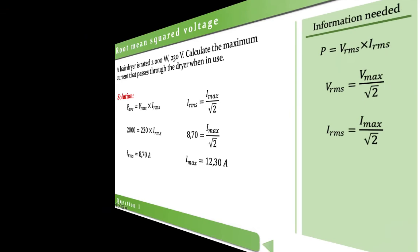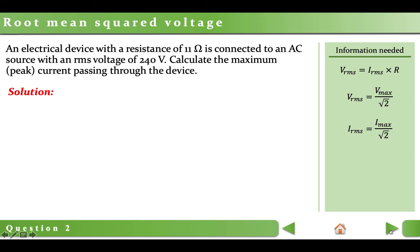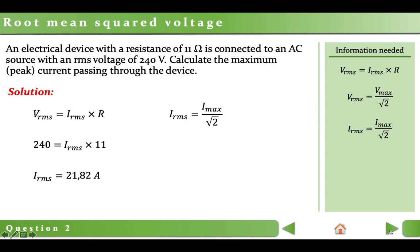Question 2: An electrical device with a resistance of 11 ohms is connected to an AC source with an RMS voltage of 240 V. Calculate the maximum peak current passing through the device. To get maximum current, first we calculate RMS current using Ohm's law. In the equation, if one value is RMS, the other must also be RMS. Using RMS voltage 240 V, RMS current equals 240/11 = 21.82 A. RMS current is √2 times smaller than maximum current, so maximum current will be 30.86 A.